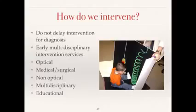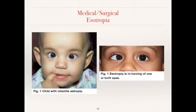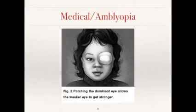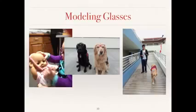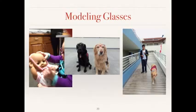Ophthalmological interventions include medical and surgical approaches and are dependent on the evaluation of each child, not just a diagnosis. Some children with esotropia may benefit from strabismus surgery. Patching may be useful in treating some cases of unilateral vision loss with superimposed amblyopia. Optical devices such as glasses for refractive errors to treat accommodative deficiencies, as well as low vision devices, may be helpful. Children can be taught to wear glasses with modeling and behavior modifications, shown here with a baby doll as a model and with service animals that help children with autism learn to wear their glasses.